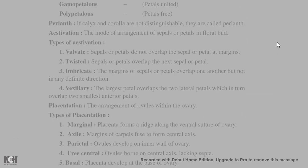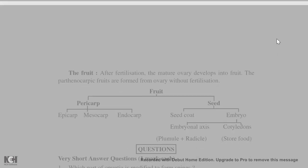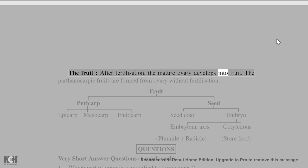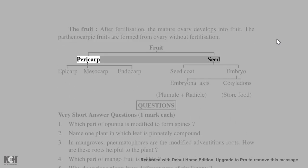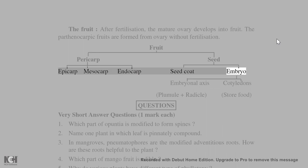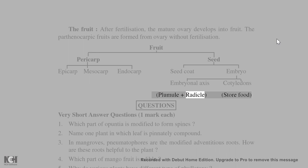The fruit: after fertilization, the mature ovary develops into fruit. Parthenocarpic fruits are formed from the ovary without fertilization. The fruit consists of pericarp (epicarp, mesocarp, endocarp) and seed. The seed comprises the seed coat, embryo (embryonal axis, cotyledons), plumule, and radicle, and stores food.